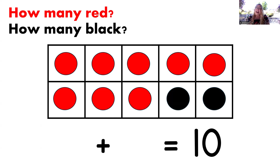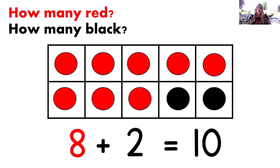How many dots are red now? You got it, eight. And how many are black? That's right, two. Let's read that equation: eight plus two equals 10. Beautiful.